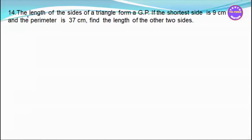The lengths of the sides of a triangle form a GP. If the shortest side is 9cm and the perimeter is 37cm, find the length of the other two sides.